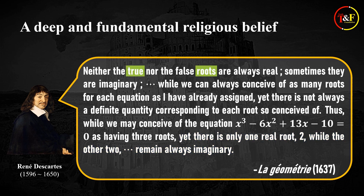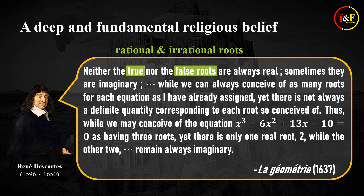Here, by true roots he means positive roots, while by false roots he means negative roots. So, true and false roots collectively mean all positive and negative rational and irrational roots. Therefore, he means if an equation has rational or irrational roots, the roots are real, but otherwise they are imaginary. Also, he believes that an equation has as many roots as its degree — for example, a cubic equation must have three roots. However, the cubic equation he came up with has only one rational or irrational root, which is two. So he refers to it as real, but the other two roots, which are not rational nor irrational, he refers to them as imaginary. The important thing is that he used the words real and imaginary in the literal sense of the words — he didn't use them just unknowingly.